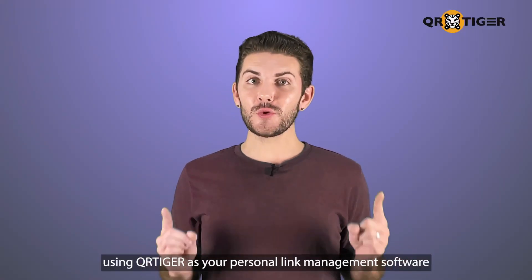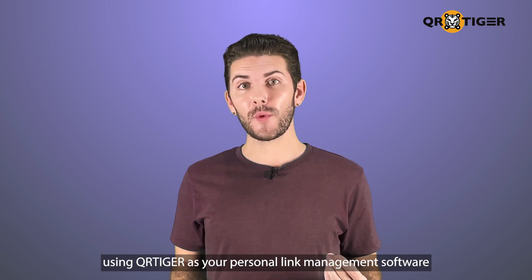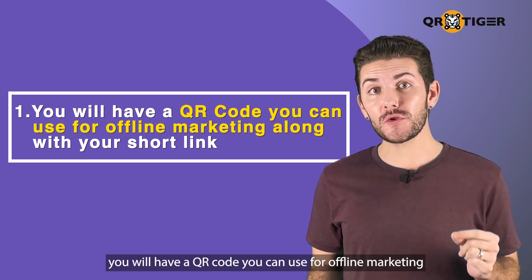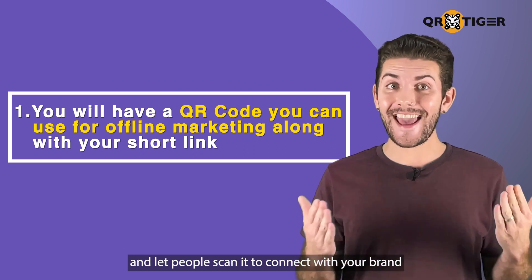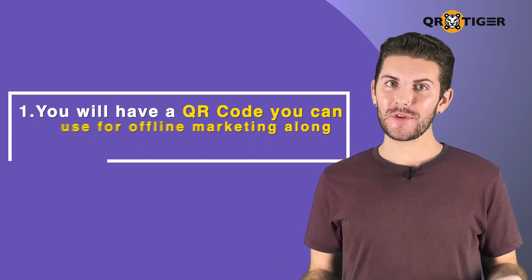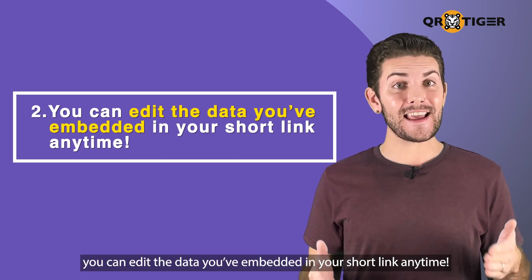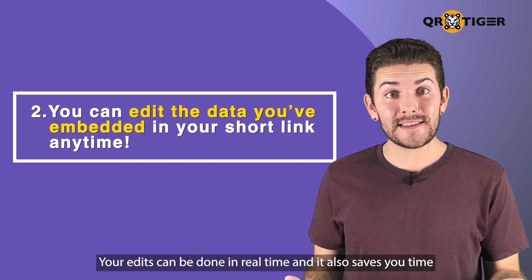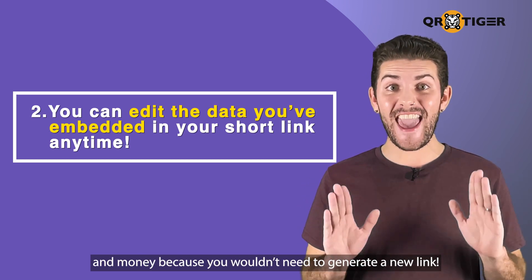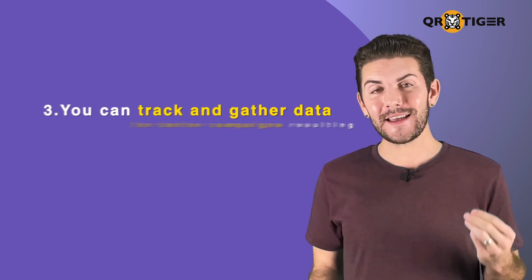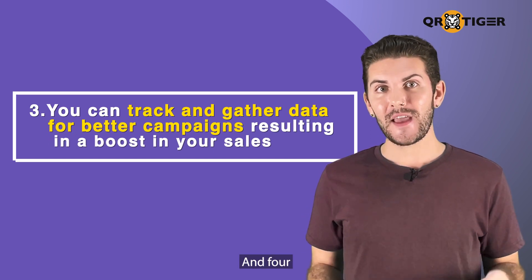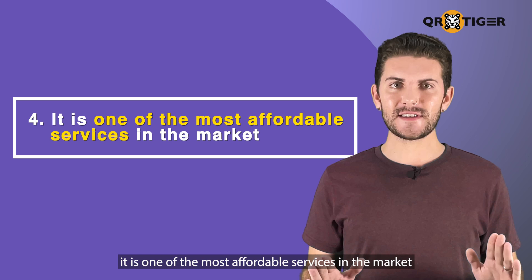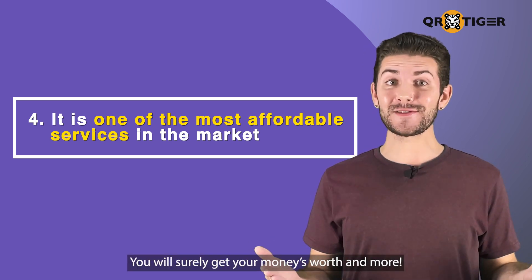To sum everything up, using QR Tiger as your personal link management software will benefit you in four ways. One, you'll have a QR code that you can use for offline marketing along with your short link — you can add it to your print media promotions and let people scan it to connect with your brand. Two, you can edit the data you've embedded in your short link any time; your edits can be done in real time, saving you time and money because you wouldn't need to generate a new link. Three, you can track and gather data for better campaigns resulting in a boost in your sales. And four, it's one of the most affordable services in the market — you will surely get your money's worth and more.